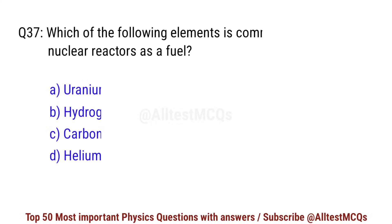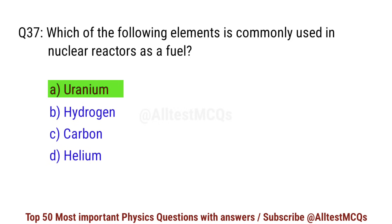Question number 37. Which of the following elements is commonly used in a nuclear reactor as a fuel? Correct option is A. Uranium.